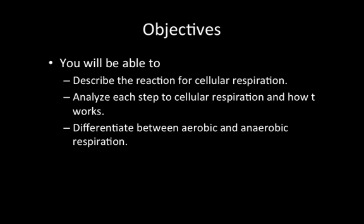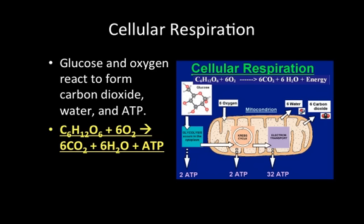Today we're gonna be able to describe the reaction for respiration, analyze the steps, and how it works. We're also gonna be able to differentiate between aerobic and anaerobic respiration. Cellular respiration is that process of taking the glucose and the oxygen — that either plants generate for themselves or that we take in. We eat the glucose and we inhale the oxygen in order to make ATP.